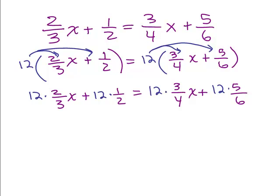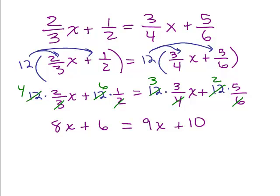All right, and if we chose the right common denominator then you should end up with an equation that has no fractions. So 3 goes into 12, I love this method getting rid of all the fractions. 12 divided by 2 is 6, 4 goes into 12 three times, 6 goes into 12 two times, and we carefully multiply all these. 4 times 2x is 8x, 6 times 1 is 6, 3 times 3x is 9x, and 2 times 5 is 10. So we've got an equation without fractions.